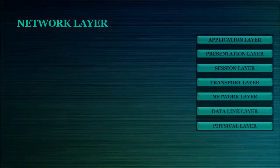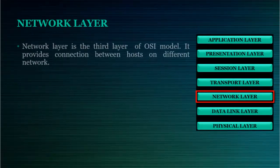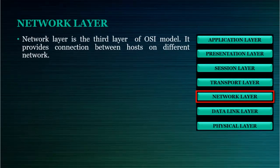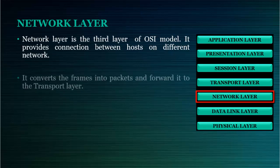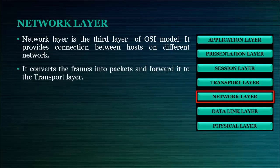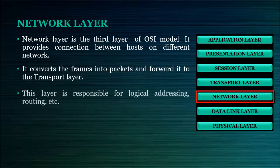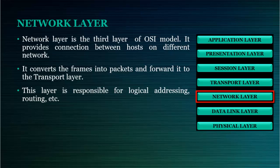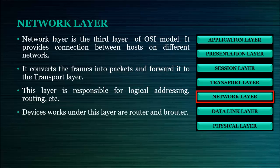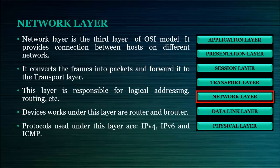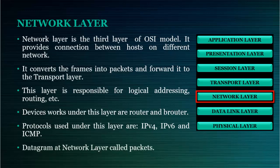Network layer is the third layer of OSI Model. It provides connection between hosts on different networks. It converts frames into packets and forwards it to the transport layer. This layer is responsible for logical addressing, routing, etc. Devices that work under this layer are routers. Protocols used under this layer are IPv4, IPv6, and ICMP (Internet Control Message Protocol). The datagram at the network layer is called packets.